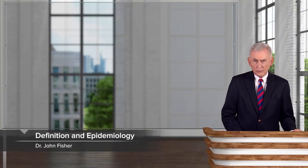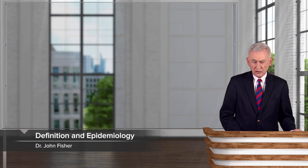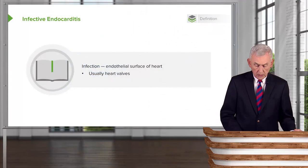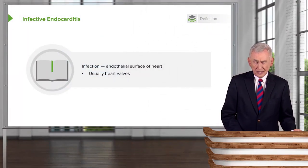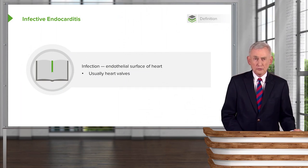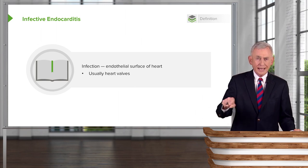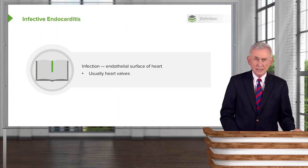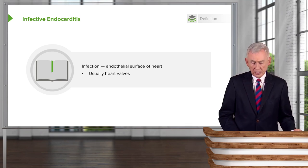In our discussion of cardiovascular infections, perhaps the most important is that of infective endocarditis. It's defined as an infection of the endothelial surface of the heart, and that's usually heart valves. But if you think about it, if you have a persistent infection anywhere in the vasculature, it could produce something similar to infective endocarditis.